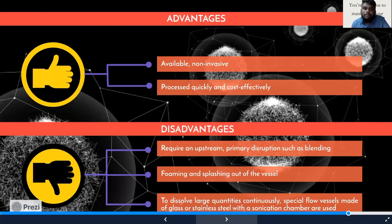Disadvantages are that more resilient tissue such as muscle requires an upstream primary disruption such as blending. When working with microliter quantities, foaming and splashing out of vessels are bigger problems. And lastly, in order to dissolve large quantities continuously, special foam vessels made of glass or stainless steel with a sonication chamber are used.